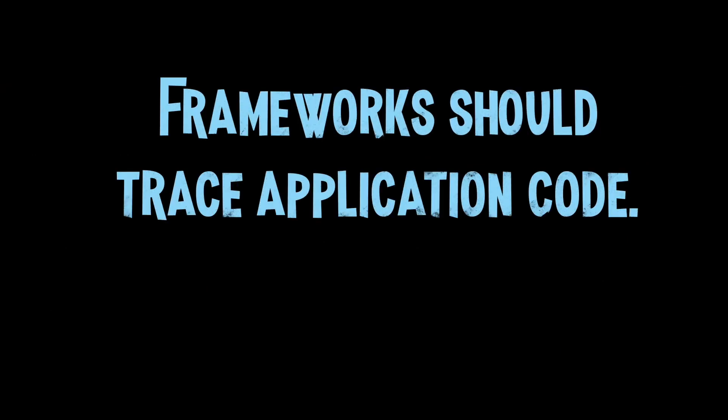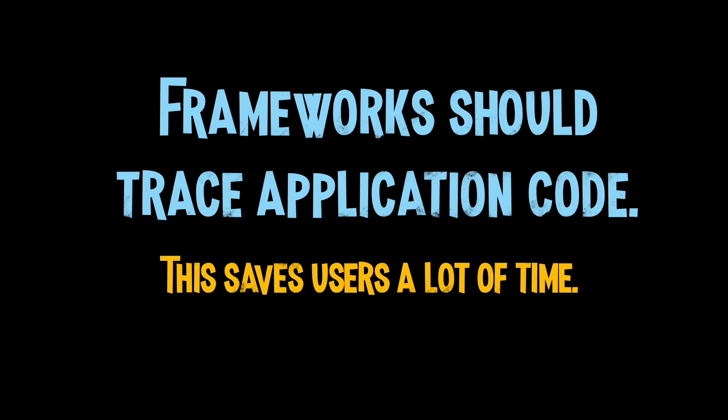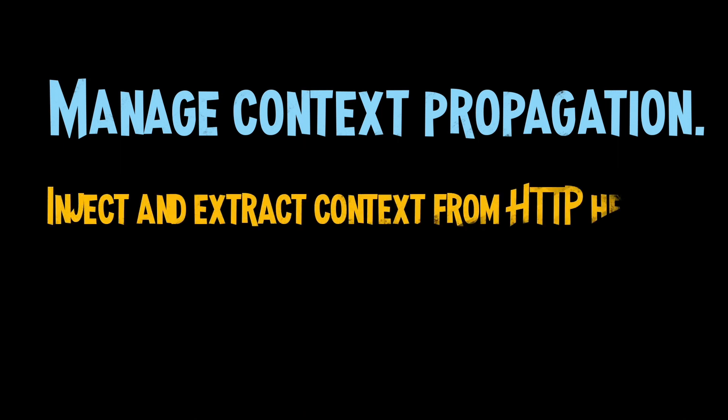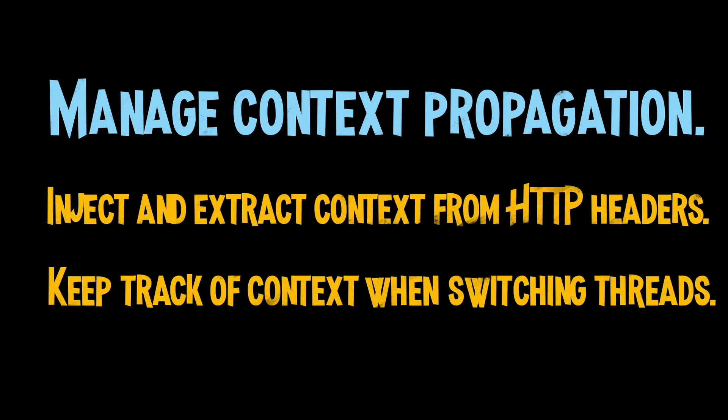Trace any application code your library executes on behalf of the user. For example, if your library is a web framework, create a span for every controller action, rather than forcing the user to create these themselves. Often, libraries which handle networking will also need to inject and extract context from the requests they are making and receiving on behalf of the application. It is a much better experience for the user if the library handles all of this for them.